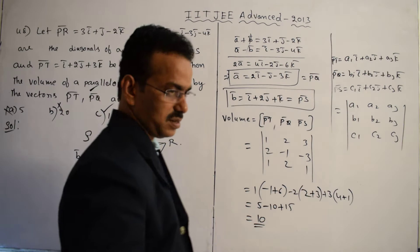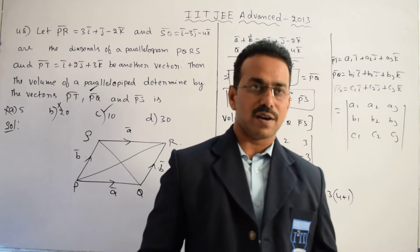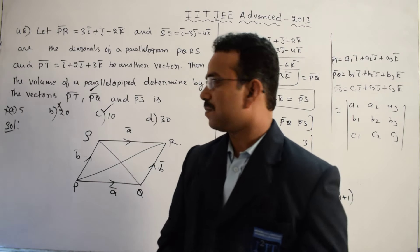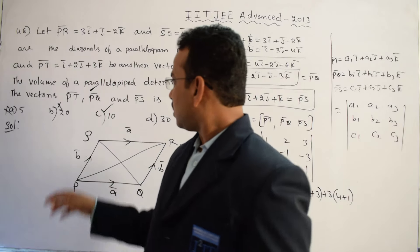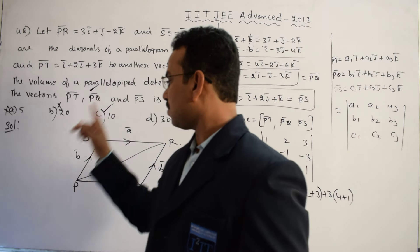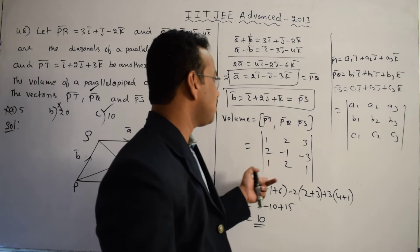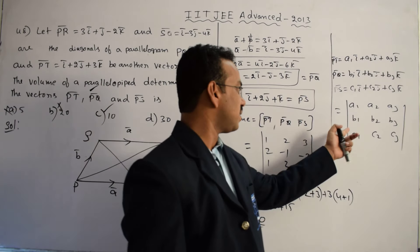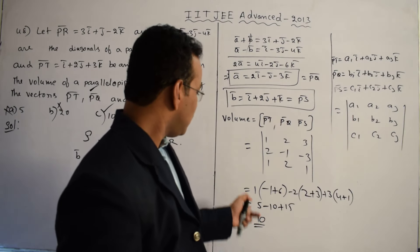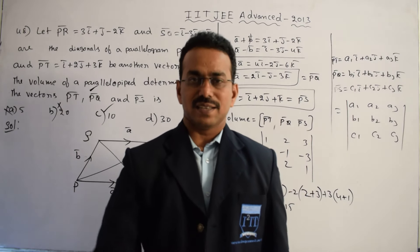In summary, the process was: we used the formula for volume of a parallelopiped as the scalar triple product of PT̄, PQ̄, and PS̄. PT̄ was given directly. PQ̄ and PS̄ were calculated as sides of the parallelogram from the given diagonals. Using the determinant formula with coefficients of Ī, J̄, K̄ for each vector, we obtained the required volume equal to 10 cubic units. Thanks for watching, all the best.